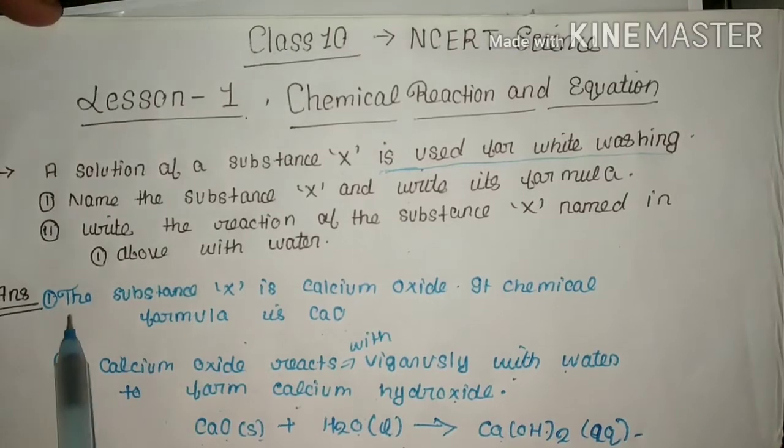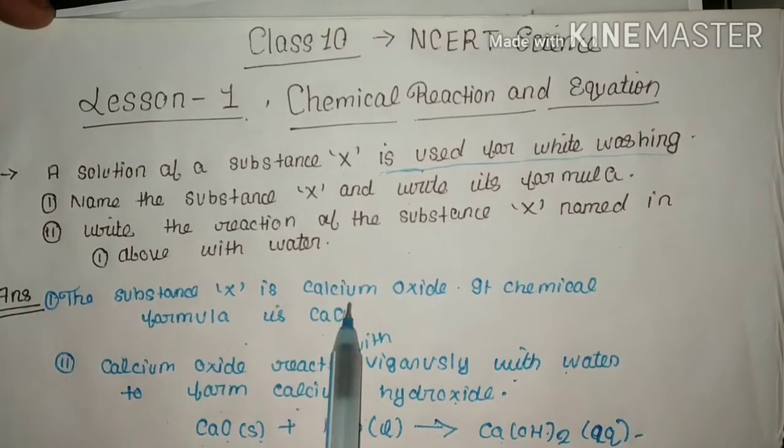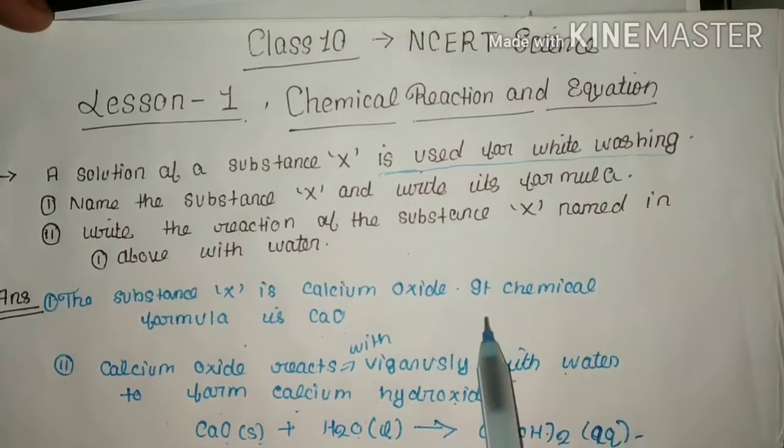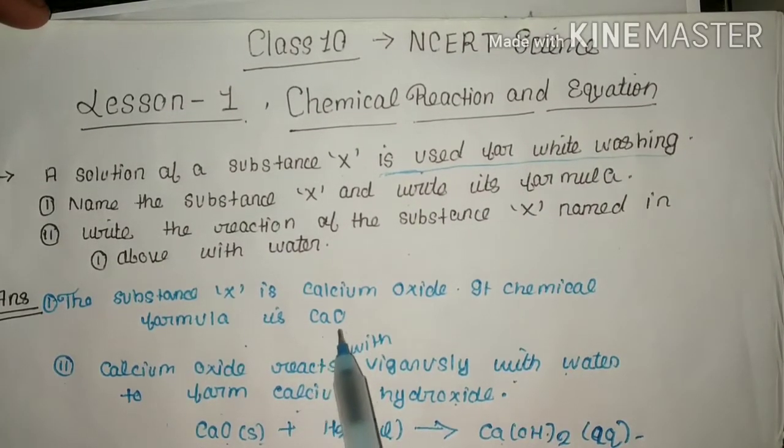Now my answer is first, the substance X is calcium oxide, used for whitewashing. And its chemical formula is CaO.